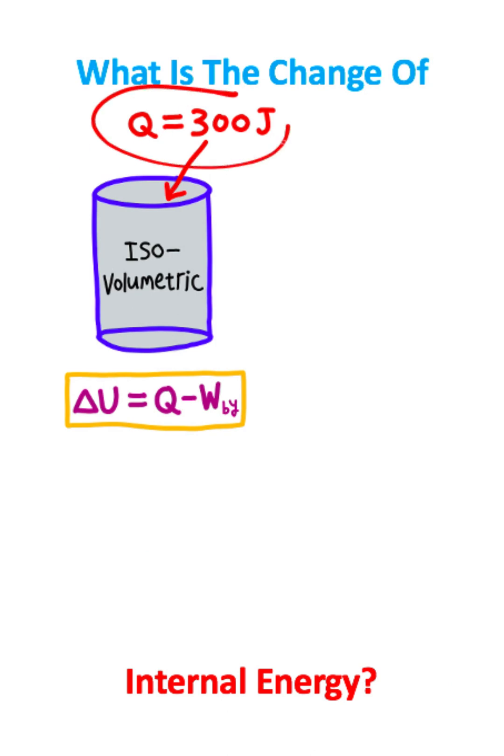So here we have that 300 joules of heat energy is absorbed in an isovolumetric process. We want to calculate the change in internal energy.